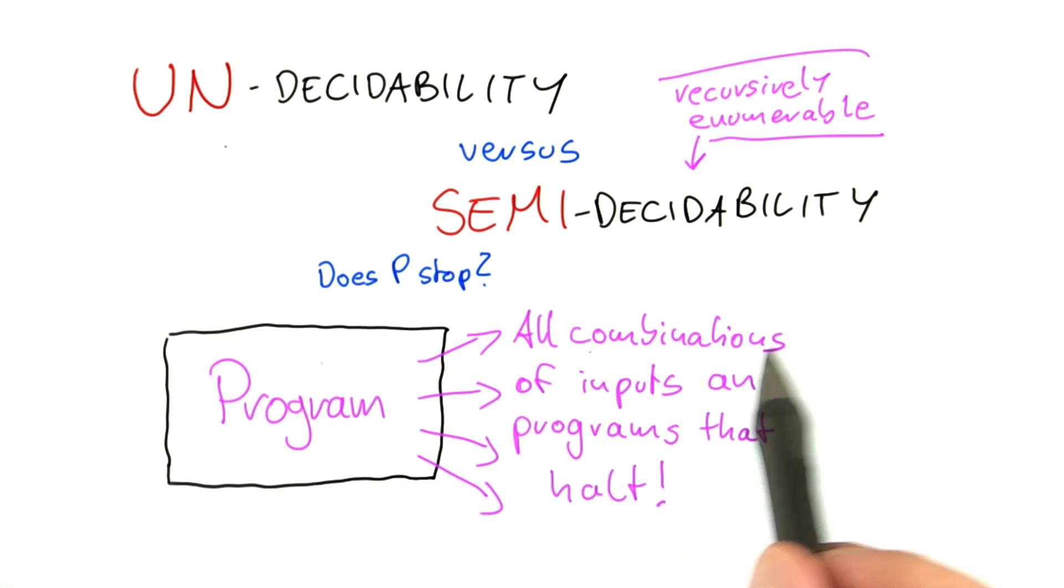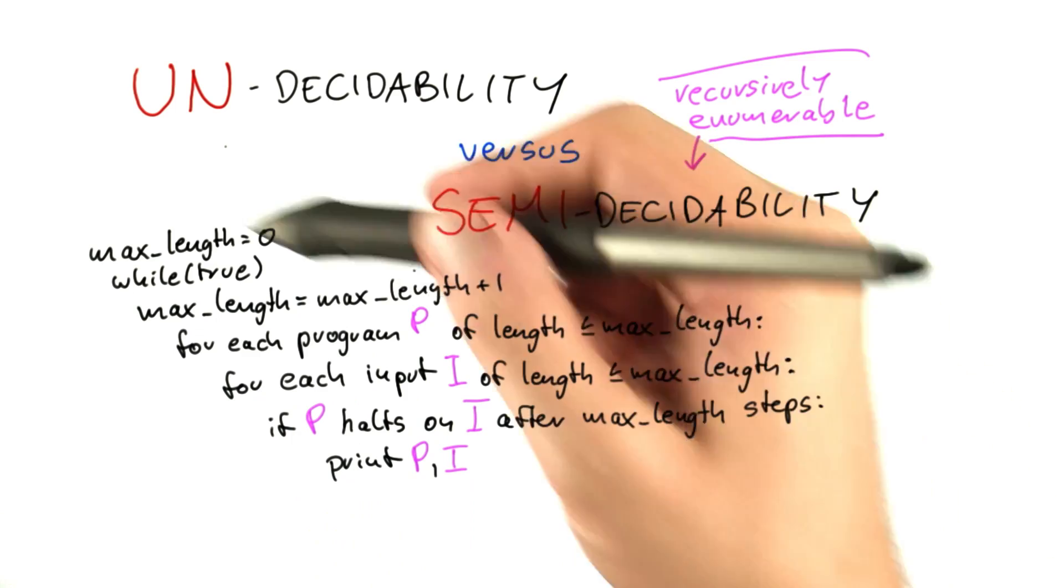So this program here cannot say for any input and program that this combination will not halt, but it can output a complete list of combinations of inputs and programs that will halt. So let's have a look at this program.